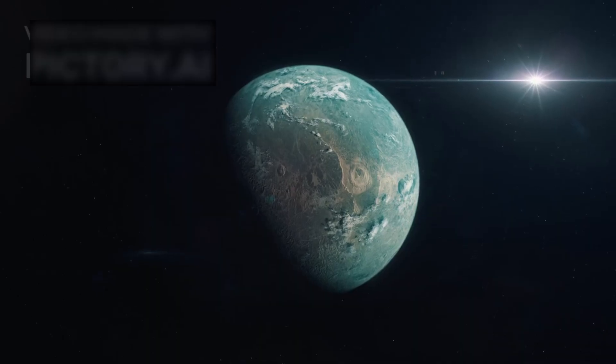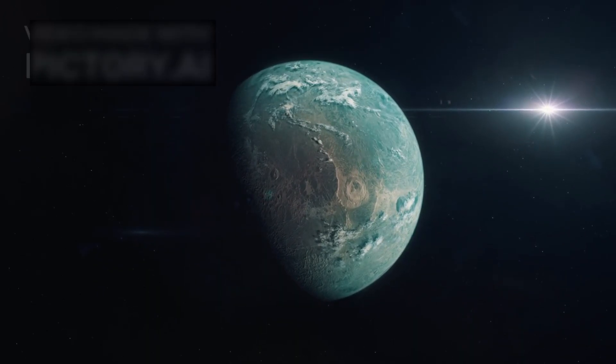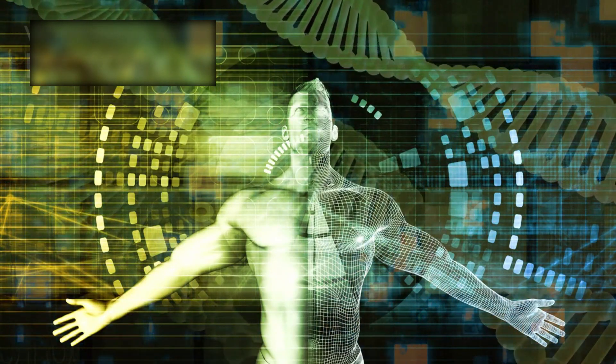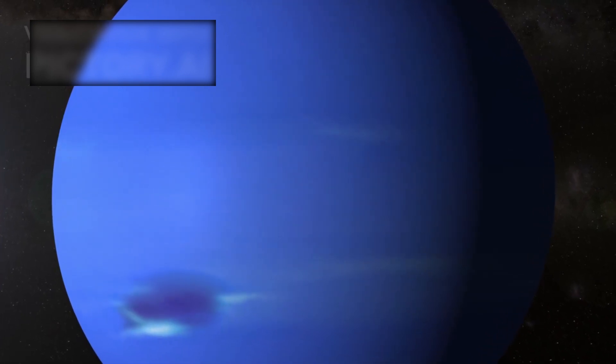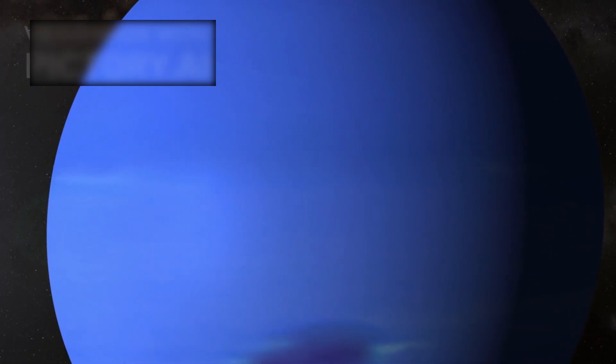In short, K218b may offer the chemistry of habitability without the reality of it. Still, the importance of this discovery cannot be overstated. For the first time, scientists have built a highly accurate atmospheric model of a sub-Neptune exoplanet in the habitable zone.